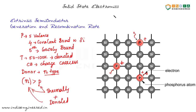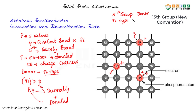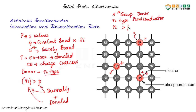A fifth-group element like phosphorus can act as a donor in silicon, generating an N-type semiconductor. In an N-type semiconductor, the number of electrons is greater than the number of holes. At thermal equilibrium, we use the notation N₀ to represent the conduction band electron concentration, and P₀ for hole concentration. The condition N₀ greater than P₀ defines the N-type material.